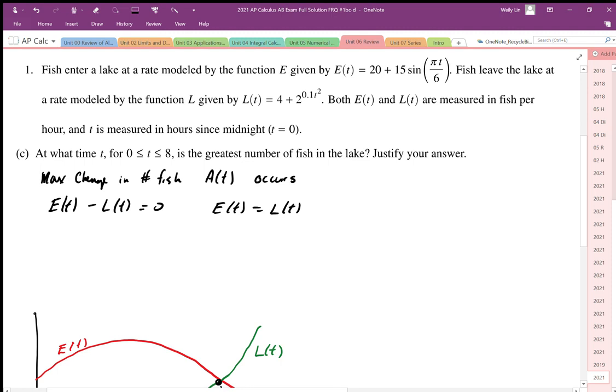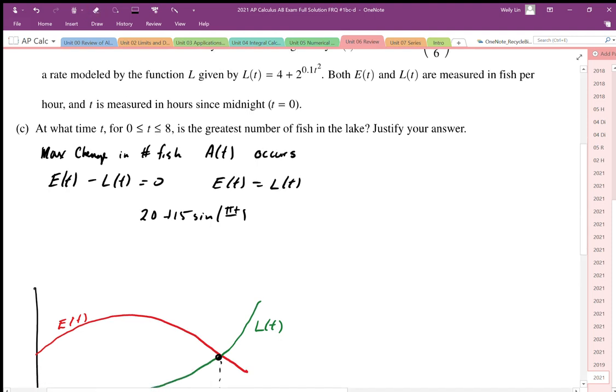We can solve this equation: 20 + 15sin(πt/6) is equal to the leaving function, which is 4 + 2^(0.1t²).